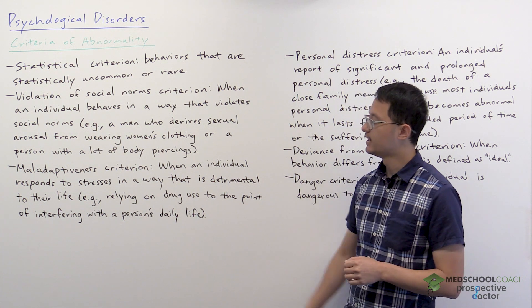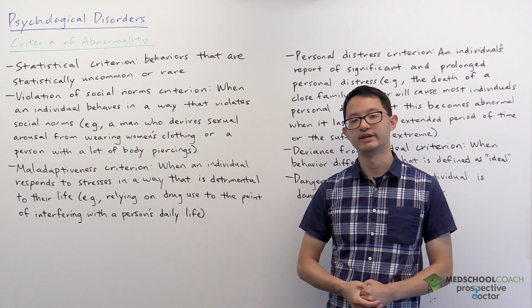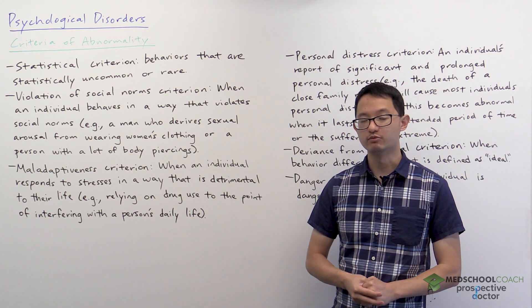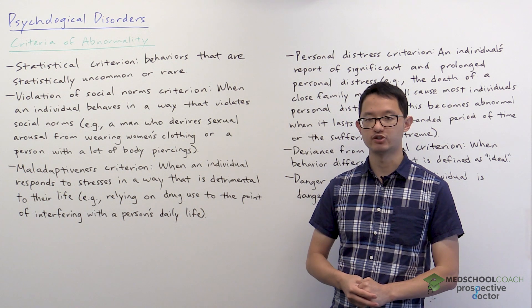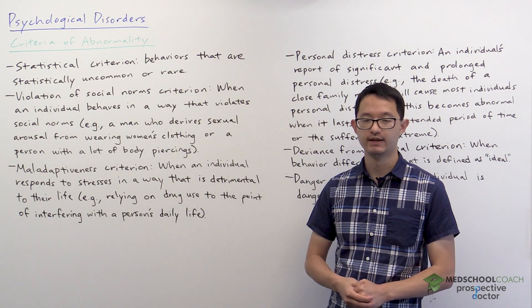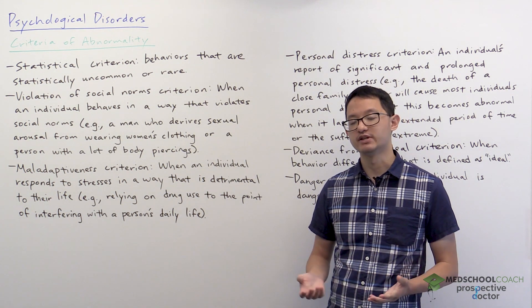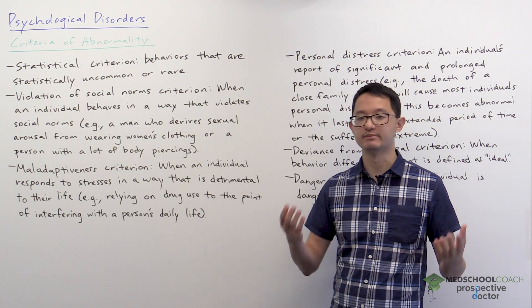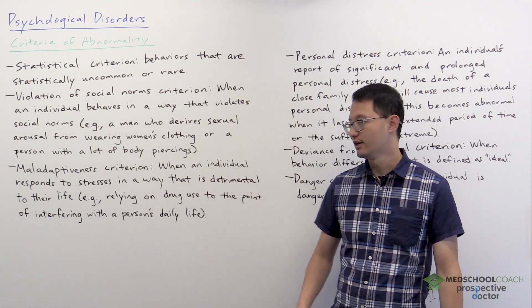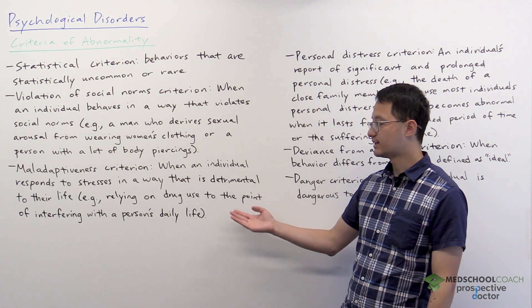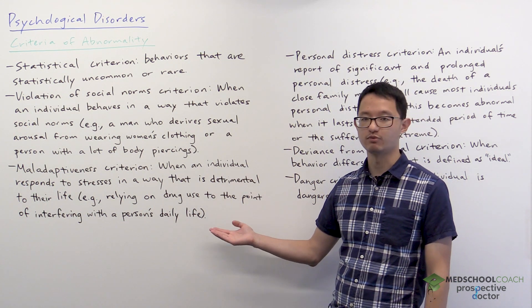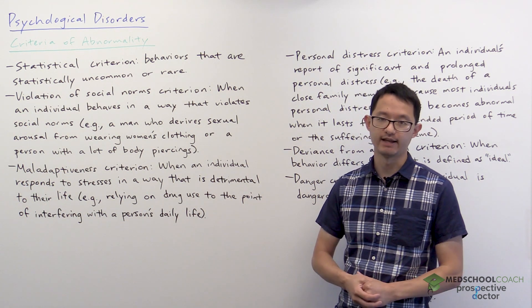Next, we have the maladaptiveness criterion. This is when an individual responds to stresses in a way that is detrimental to their life. Examples include a person who drinks themselves to sleep every night, or a person that relies on drug use to the point where it disrupts their daily life.